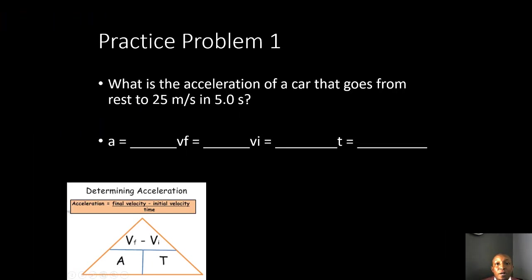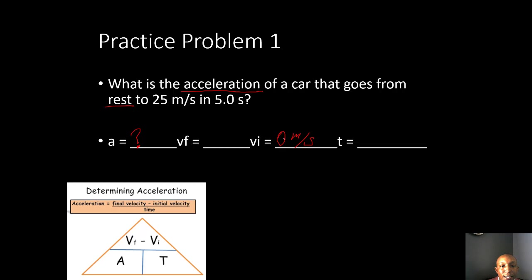Now let's do some practice problems. Practice problem number one: what is the acceleration of a car that goes from rest to 25 meters per second in five seconds? It asks what is the acceleration, so we don't know what our acceleration is — let's put a question mark beside that.